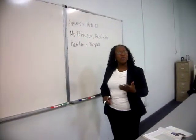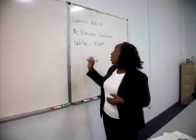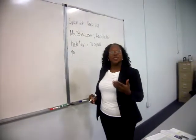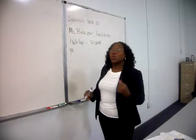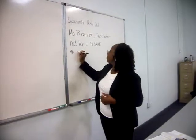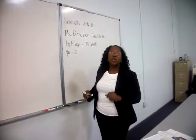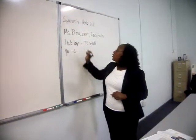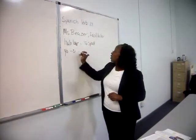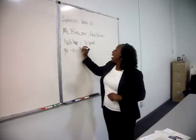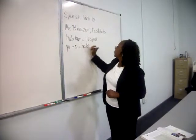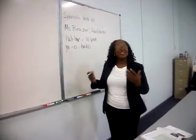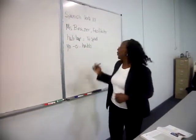But now I want to say 'I speak.' The first person, which is I, is 'yo.' One of the endings that you use for yo is -o. So in Spanish, what you do is drop the -ar and turn that into an -o. So you say 'hablo.' That means I speak — yo hablo.